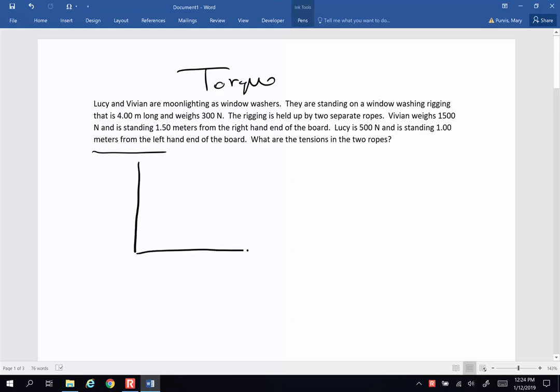So here is my window washing rigging. Physics instructors use these a lot because they're good torque problems. We're going to have two ropes holding up this whole setup. I am going to call the tension in this rope tension one and the tension in the second rope over here tension two. Now the entire rigging has a force vector downward of 300 newtons.